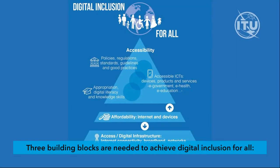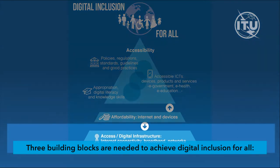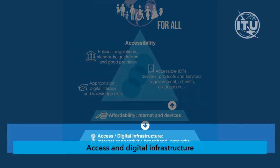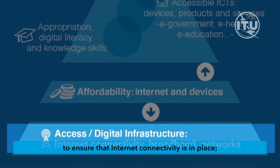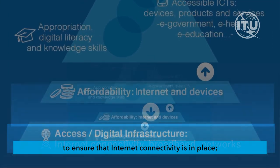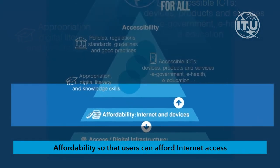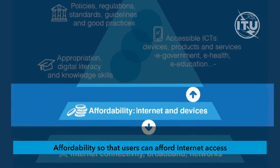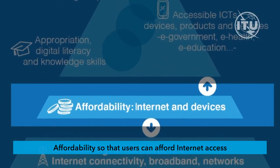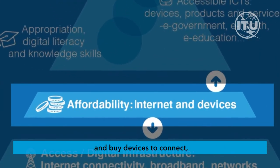Three building blocks are needed to achieve digital inclusion for all. First, access and digital infrastructure to ensure internet connectivity is in place. Second, affordability, so that users can afford internet access and buy devices to connect.